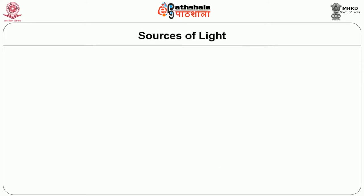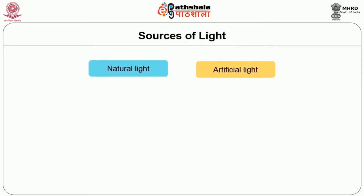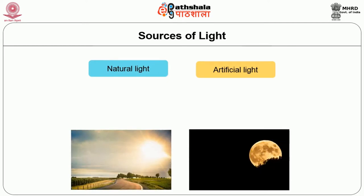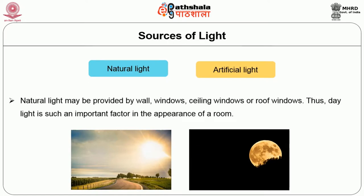There are two sources through which we obtain light: natural light and artificial light. Natural lighting is when we harness the light given out by natural elements in the environment such as the sun and moon. Natural light may be provided by walls, windows, ceiling windows, and roof windows. Daylight is such an important factor in the appearance of a room.